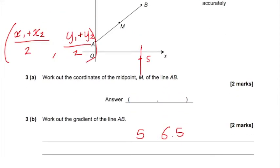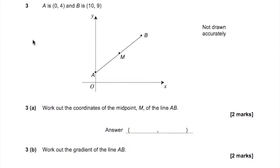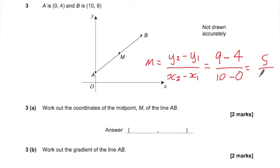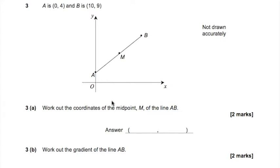Work out the gradient of line AB. So we've got a formula for that as well. So it's first y-coordinate, sorry, second y-coordinate minus the first over second x-coordinate minus the first. And it doesn't matter which way round you have them as long as you're consistent. So we're going to have 9 minus 4 over 10 minus 0. So 9 minus 4 is 5, 10 minus 0 is 10, so the gradient will be a half. You can also think of it as changing y over changing x, which some people prefer. So we've got a gradient of a half.